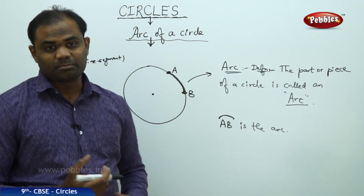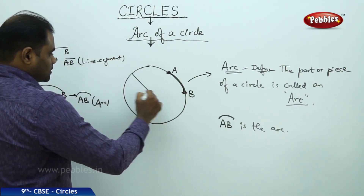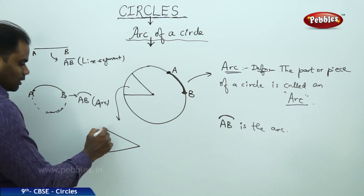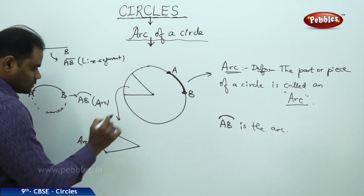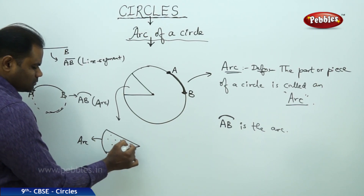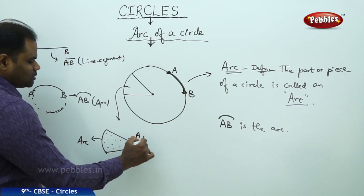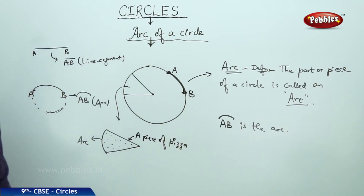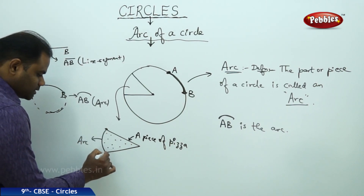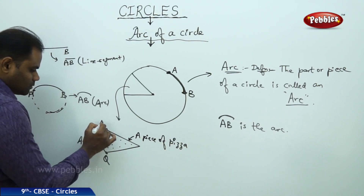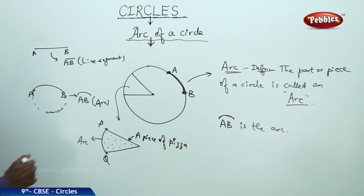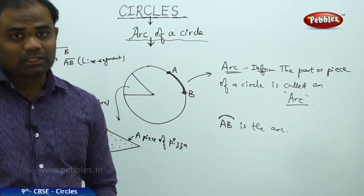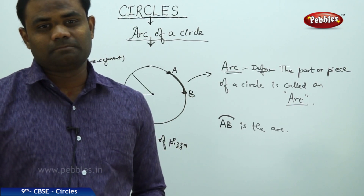A real-life example of an arc is a pizza. When you take a pizza and cut a slice, the outer part of that slice defines an arc. The outer face with endpoints P and Q defines an arc PQ. That is how we understand arc of a circle — a part or piece of a circle is an arc.